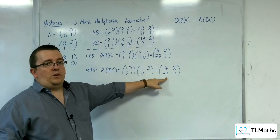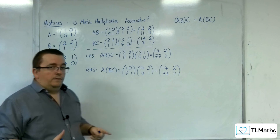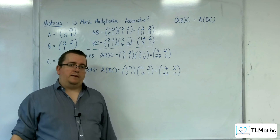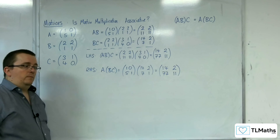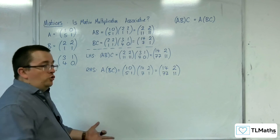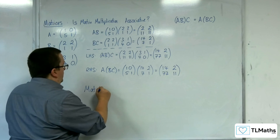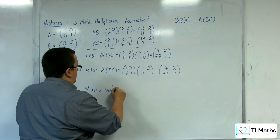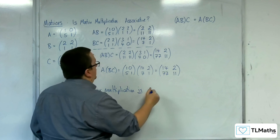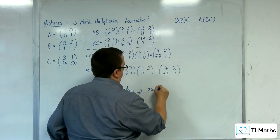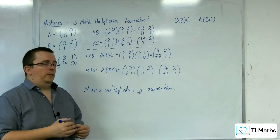We can see that the left-hand side is equal to the right-hand side. So for these three matrices that I have randomly picked, I have found that they are associative under multiplication — and this is true in general. So matrix multiplication is associative. It's not commutative, but it is associative.